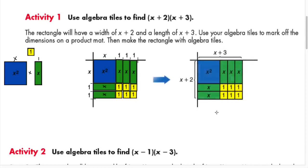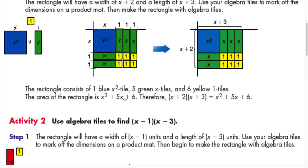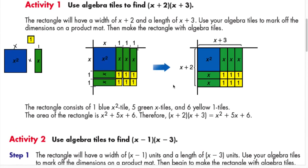If you do it properly, this forms a rectangle where the width is x+2 and the length is x+3, and the area is the product of the binomials. You have one x² tile, five x-tiles, and six unit tiles, so you end up with x² + 5x + 6. That's how you multiply binomials using algebra tiles.